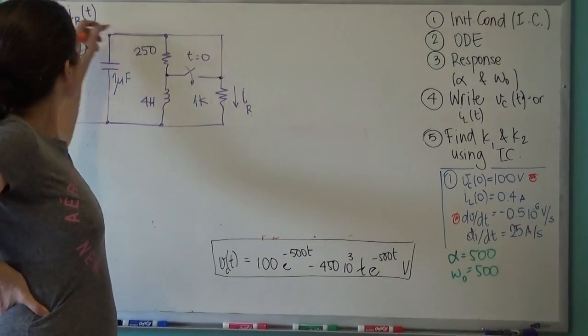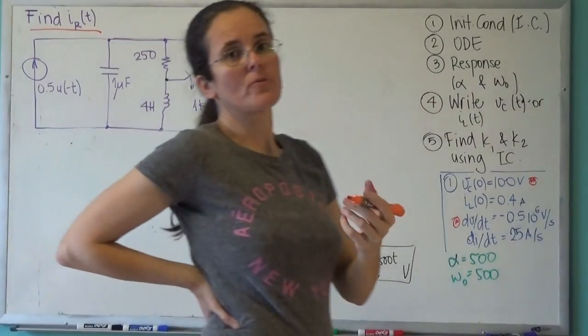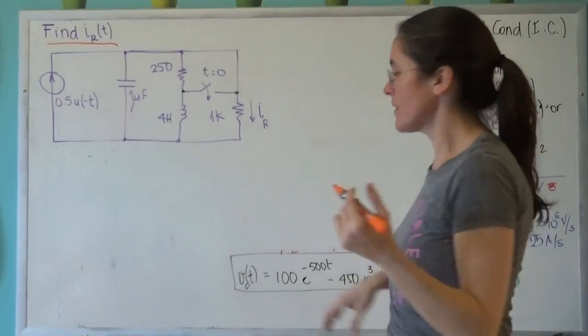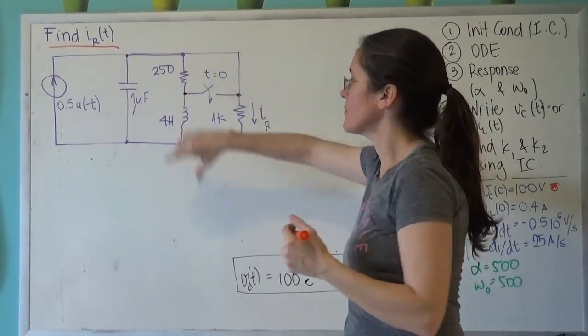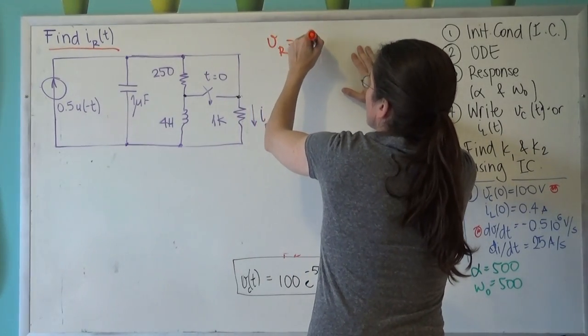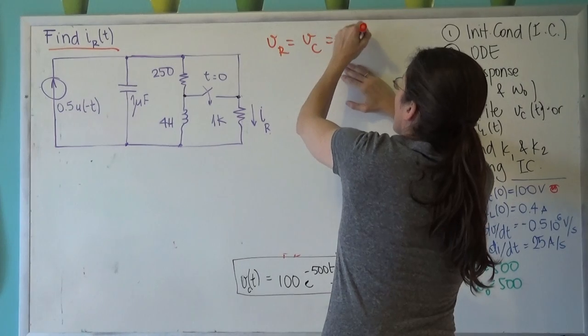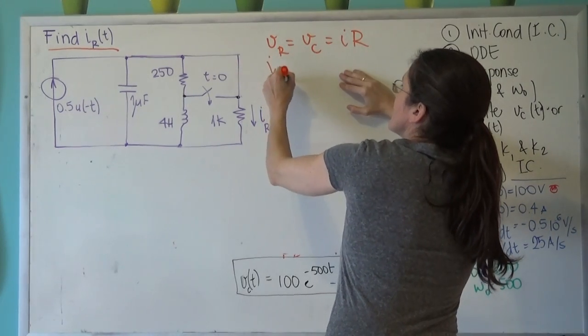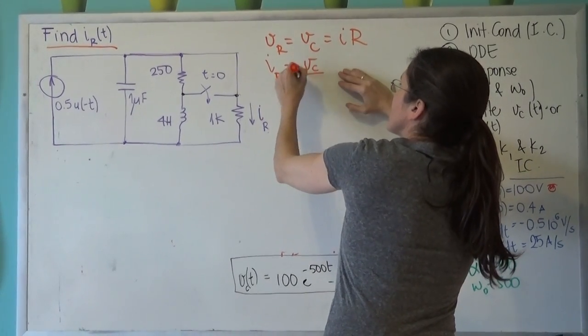Now let's answer the question. The current through the resistor, because it's a parallel circuit, VR equals VC and equals IR. So the current through the resistor is voltage on the capacitor divided by resistance.